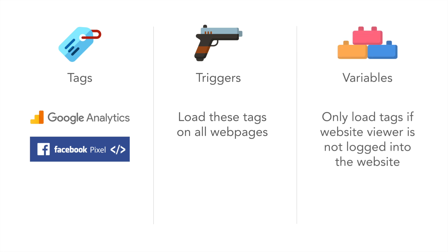Variables then allow you to set specific controls and functions on how you want your tags and triggers to work. For example, using Google Analytics to fire on all public-facing pages, we would then set a variable to not fire the Google Analytics tag to people that are actually logged in — administrators logged into your website. That way we're not counting sessions from your web administrators or website developers against your public data.